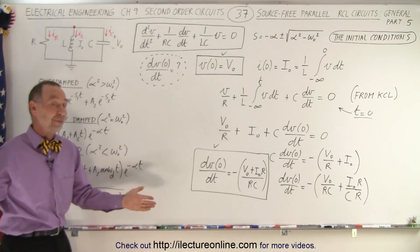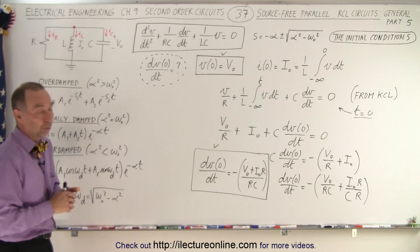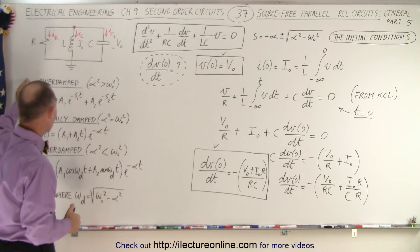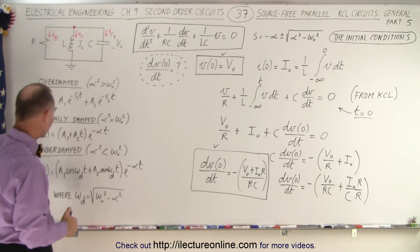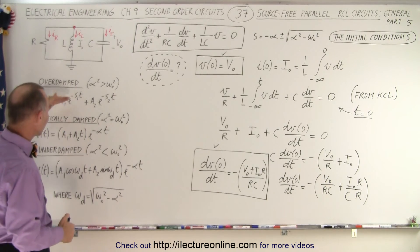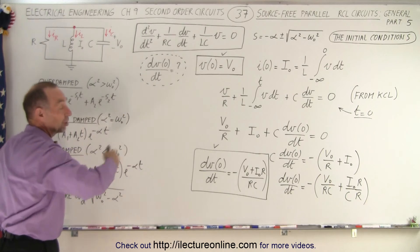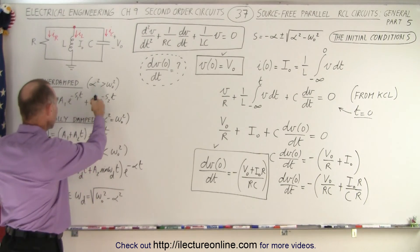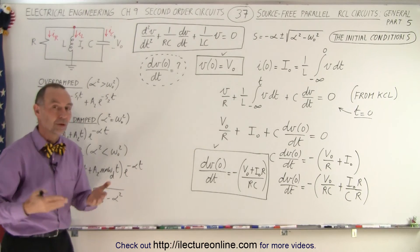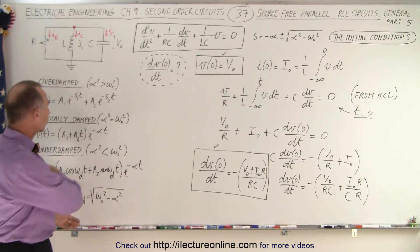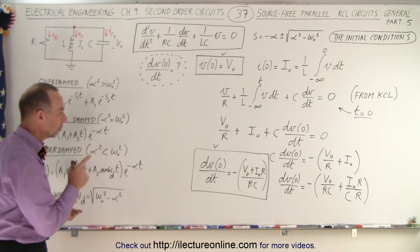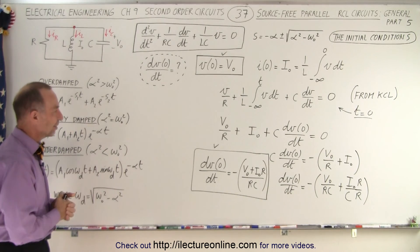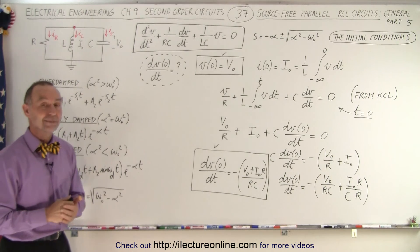So next we're going to go ahead and actually do that. We're going to show you three examples: a case where we have over damping, a case where we have critical damping, and a case where we have under damping. Given the general equations and specific initial conditions, we should be able to calculate A1 and A2 in each case and come up with the actual finished equation. We'll show you how to do that for the three cases in the next three videos, so stay tuned.